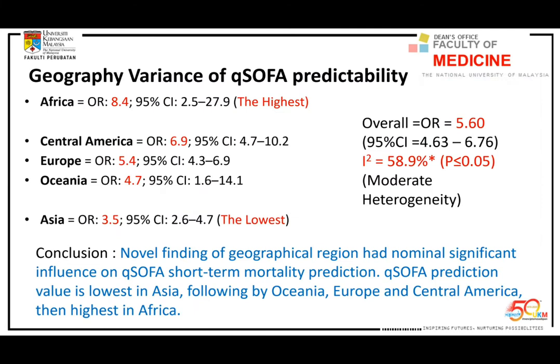We found that different geographical areas have different organ failure odds ratios. Using qSOFA as a measurement tool: for African patients with qSOFA more than 2, the odds ratio for mortality is 8.4. For Central America, Europe, and Oceania, the odds ratio using qSOFA more than 2 is about 5.4 — significantly different. For Asian patients, the odds ratio is as low as 3.5. Our study found moderate heterogeneity across different geographical areas and phenotypes.